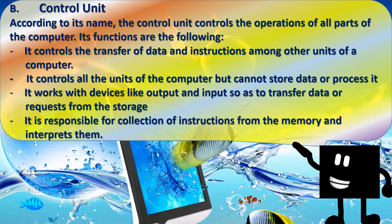The control unit, according to its name, controls the operations of all parts of the computer. Its functions are the following: it controls the transfer of data and instructions among other units of a computer, it controls all the units of the computer but cannot store data or process it, it works with input and output devices to transfer data or requests from storage, and it is responsible for collecting instructions from memory and interpreting them.